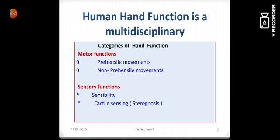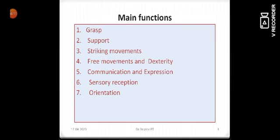The hand is a multidisciplinary organ in our body which has got various types of functions like motor functions and the sensory functions. Motor functions mainly are the grasp, support, striking movements, dexterity movements, expressions, sensory receptions and orientation with the help of hand.